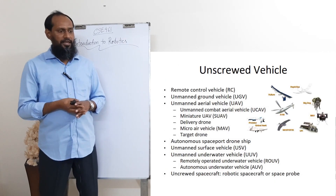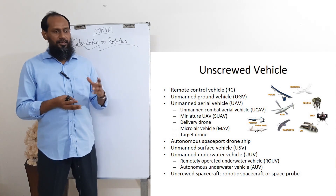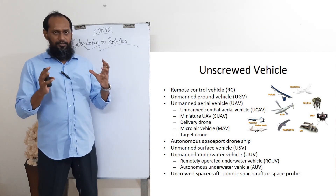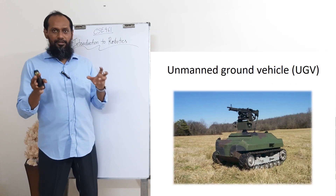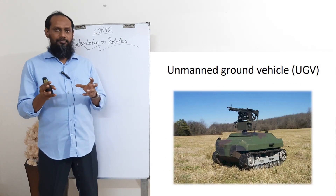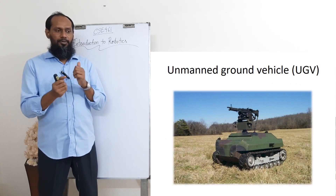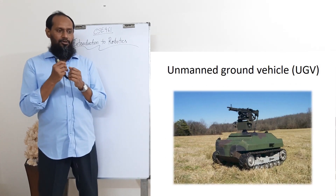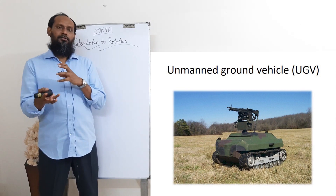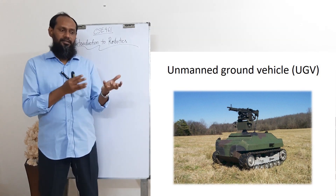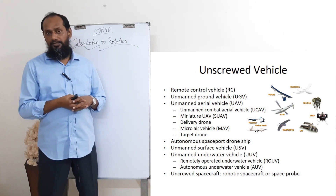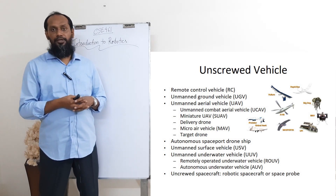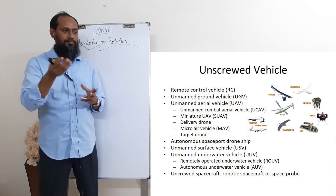The second type is unmanned ground vehicle — vehicles that are unmanned but can be controlled autonomously or by a remote control. And then unmanned aerial vehicle; you can understand by the name — aerial vehicle means there are a number of types.